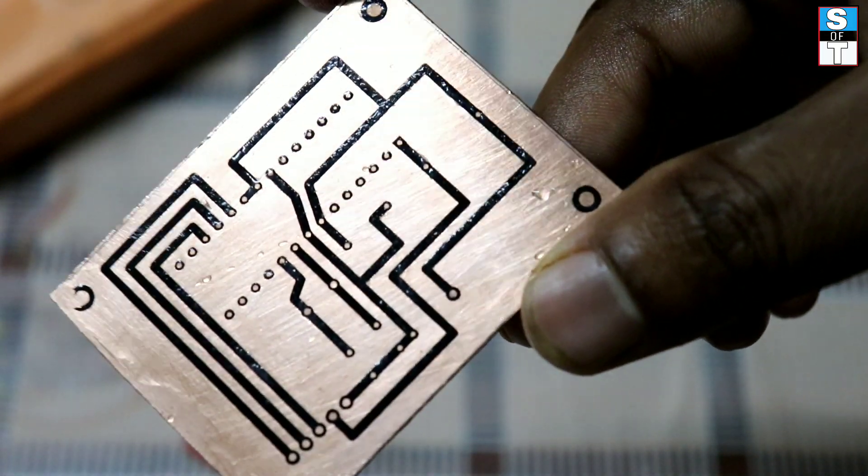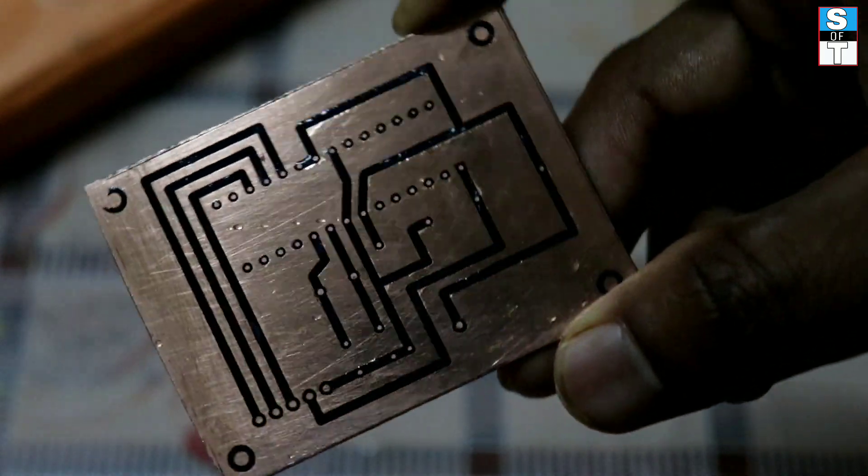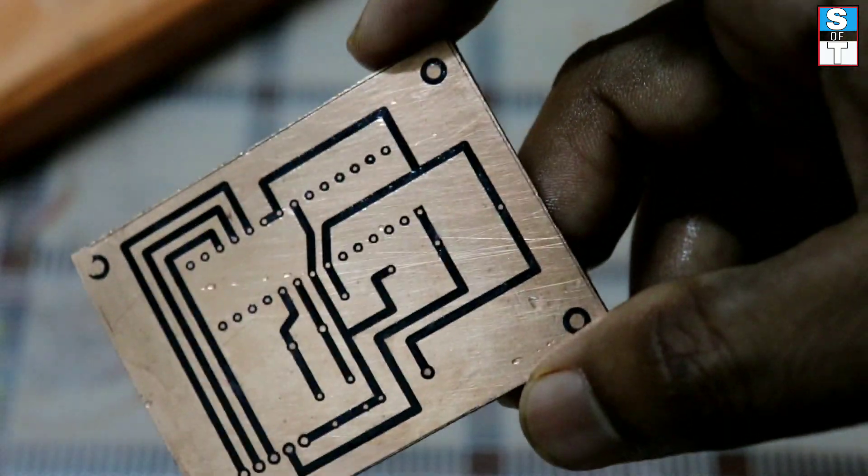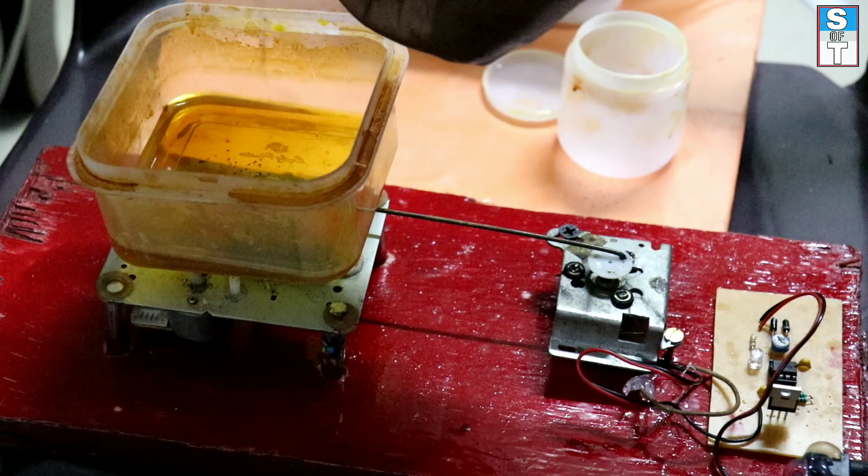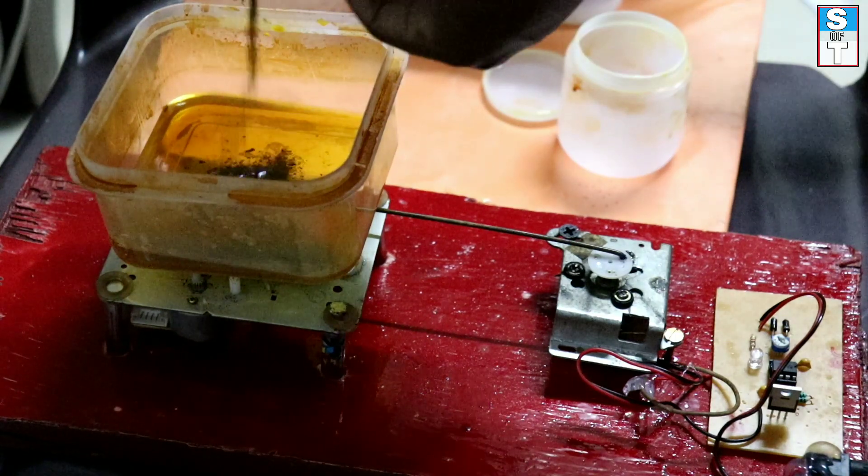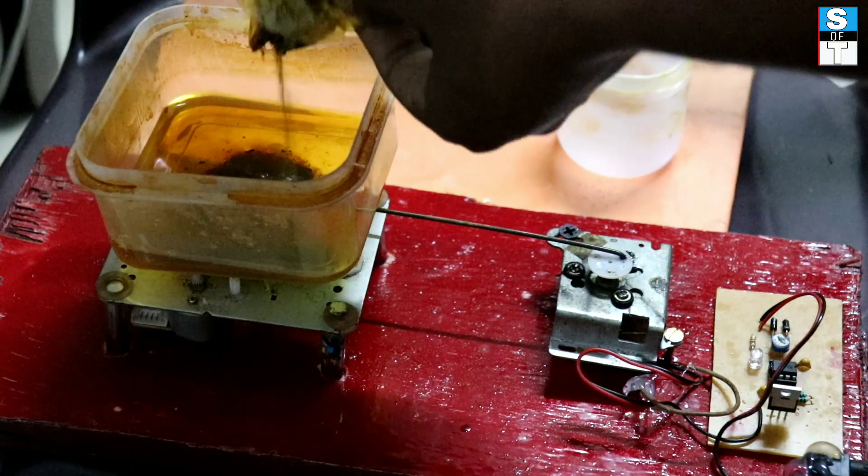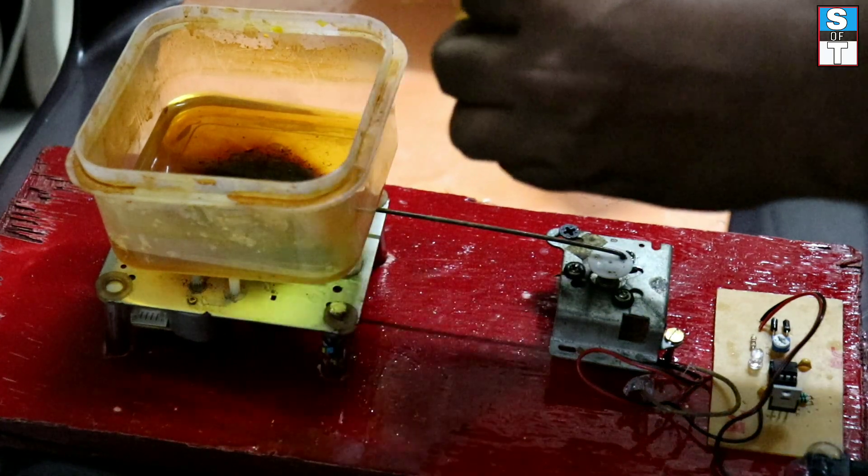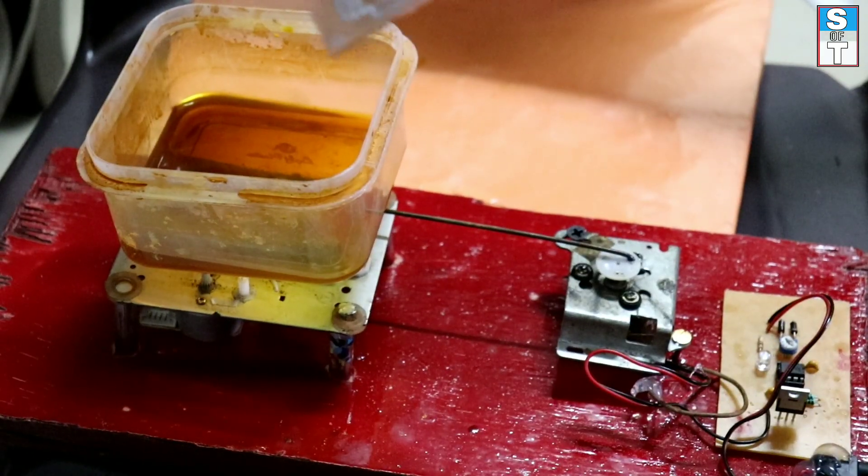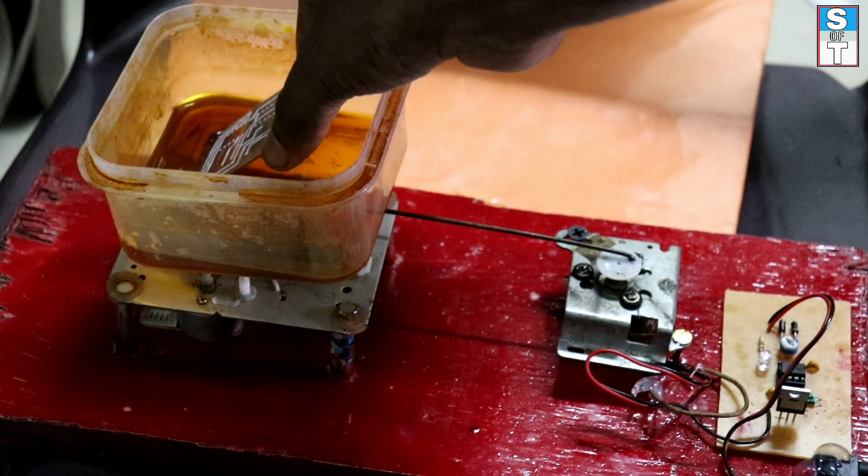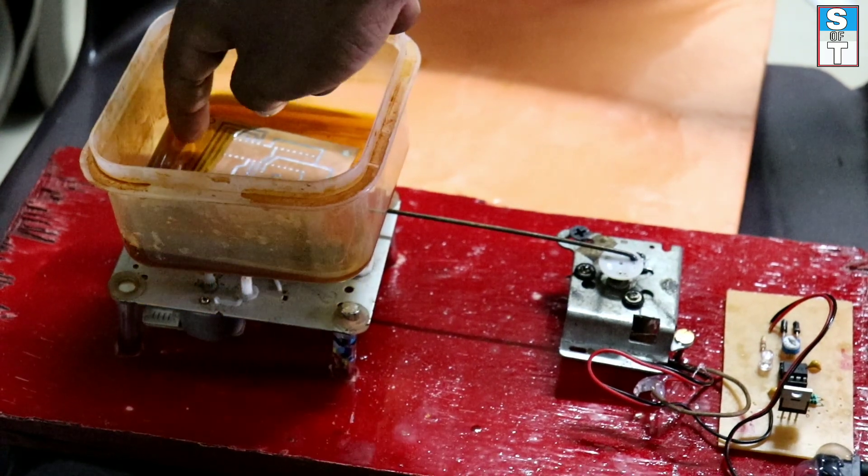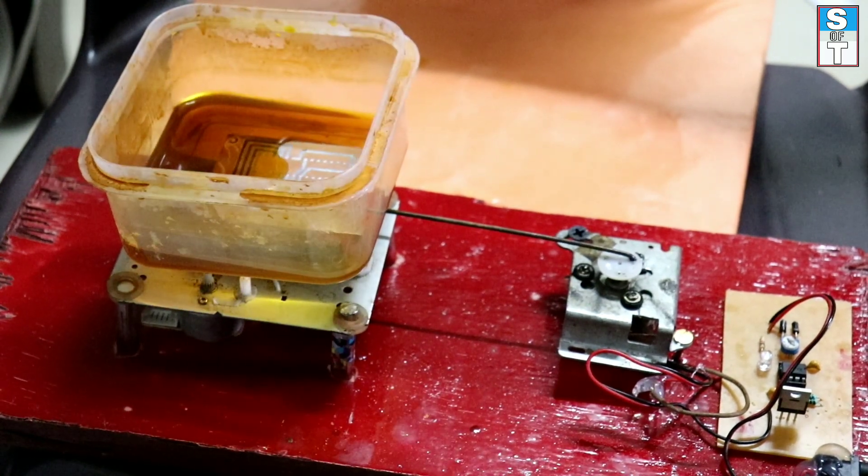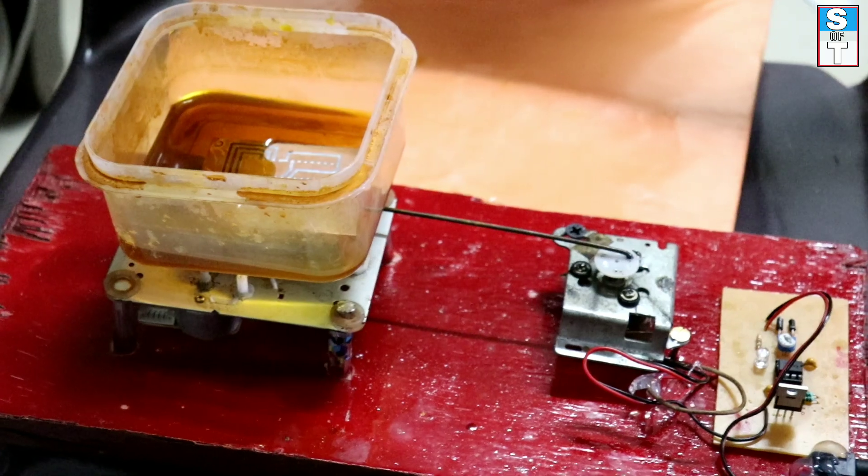Then we are going to the important part of PCB making, which is etching. Etching is the process of removing the unwanted copper from the PCB. For etching purpose we are adding ferrous chloride. It is a homemade etching machine. It is not necessary for you. You can do this step by vigorously shaking the container.